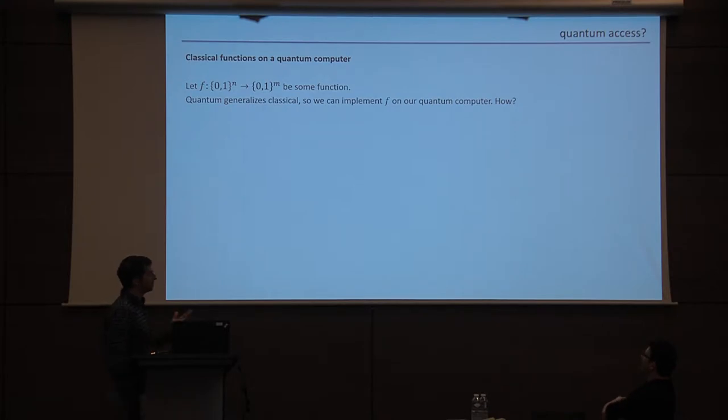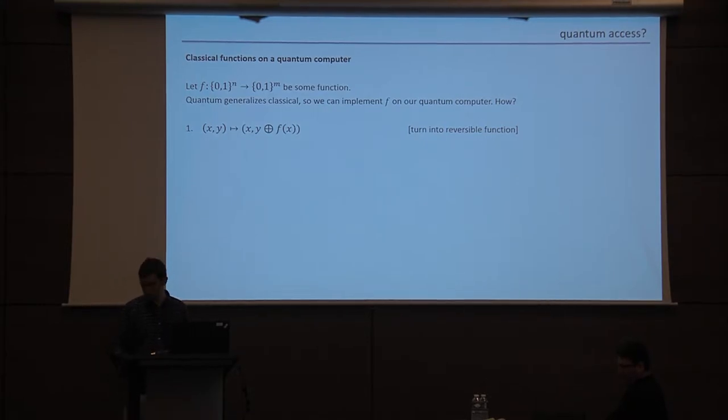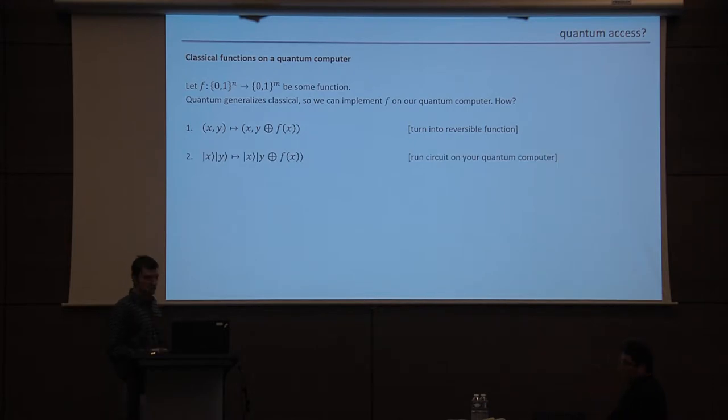So before I can explain what it even means to have quantum access to a classical crypto system, let me talk a little bit about how to execute classical functions on a quantum computer. We better be able to do this because quantum computers are a generalization of classical ones. So how do we implement some function f? Well, basically we can turn it first into a reversible function by keeping the input around and then computing the function by XORing it into another register. And then we can observe that this is now a unitary operator suitable for running on a quantum computer. So in particular if you have any circuit for your function f, there are standard ways of transforming it into a reversible circuit efficiently, and then this circuit is a special case of a quantum circuit and we can run it on our quantum hardware.